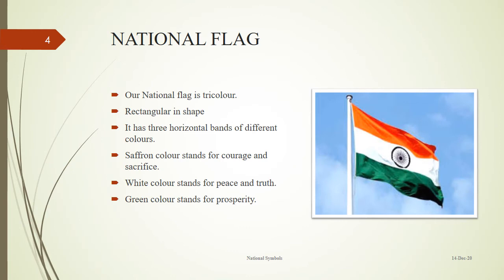Our national flag is called Tiranga. There are three horizontal bands and it is rectangular in shape. The three horizontal bands are of different colors: saffron, white and green. Saffron or kesaria stands for courage and sacrifice. It is a reminder to the citizens of India that so many people and soldiers have sacrificed and given their lives for the freedom of their country. White color stands for peace and truth. Green color signifies prosperity, life, success and happiness.